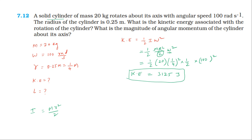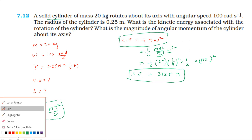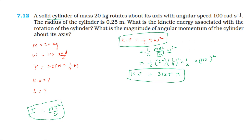The kinetic energy formula is half I omega squared, and moment of inertia of a solid cylinder is mr squared by 2. Now for angular momentum, the formula is L equals I omega, where the moment of inertia is mr squared by 2 for a solid cylinder, into omega.